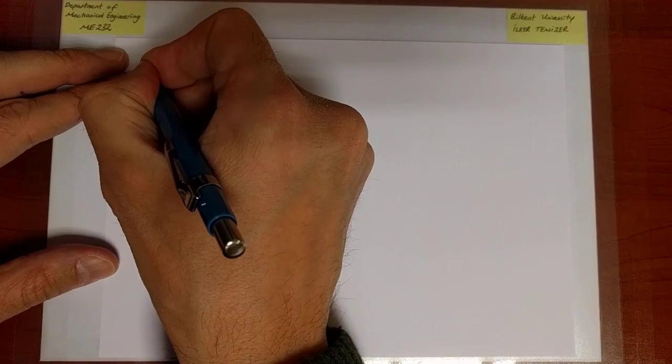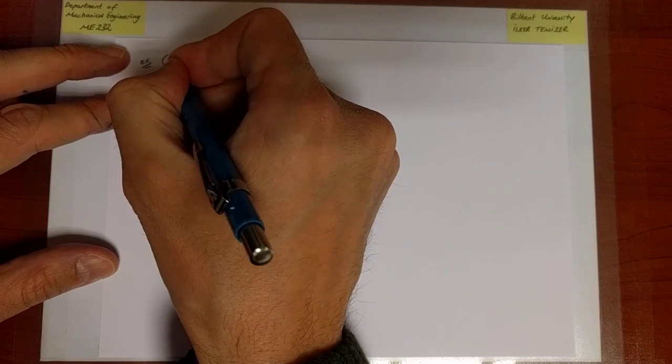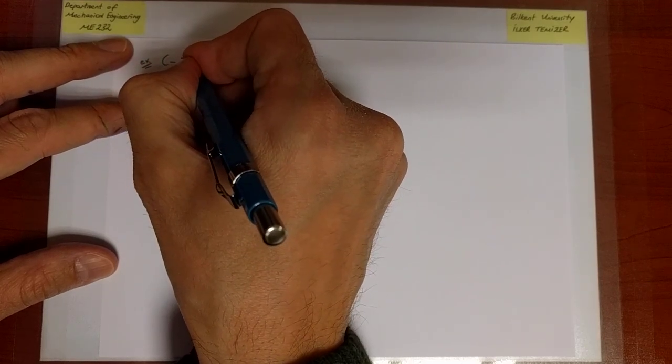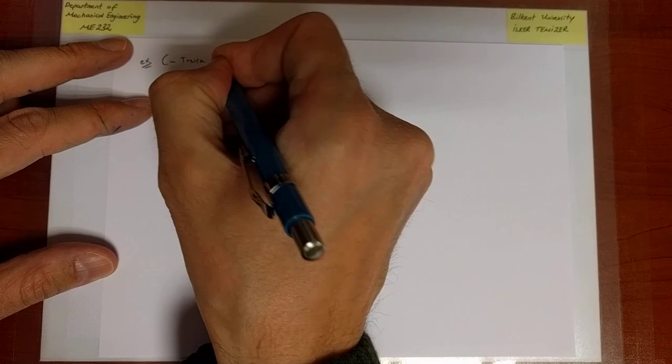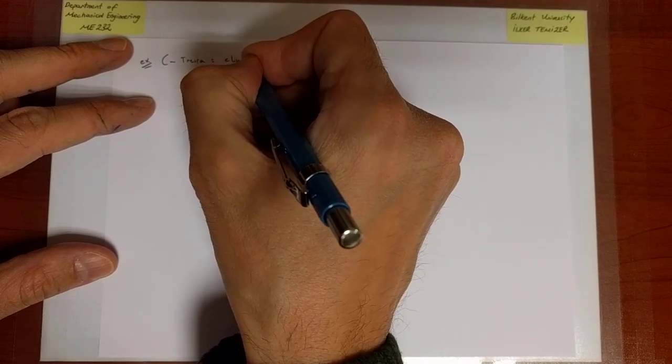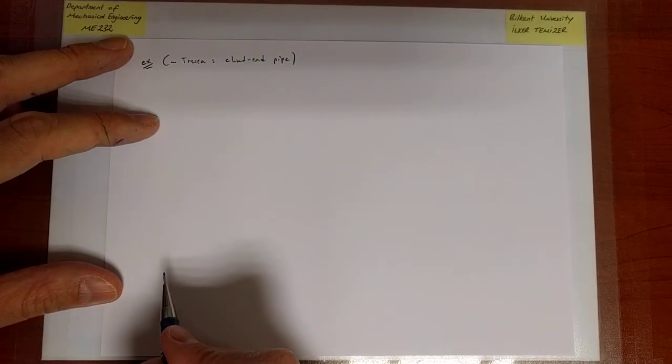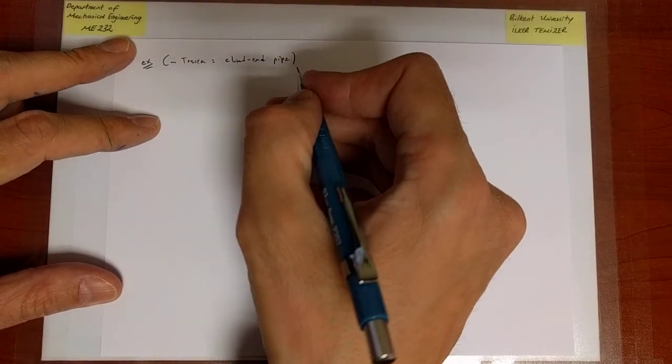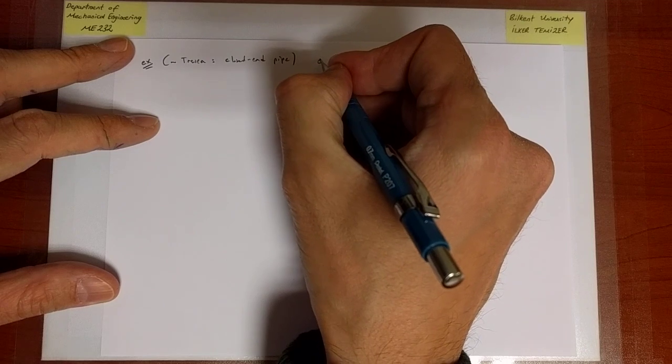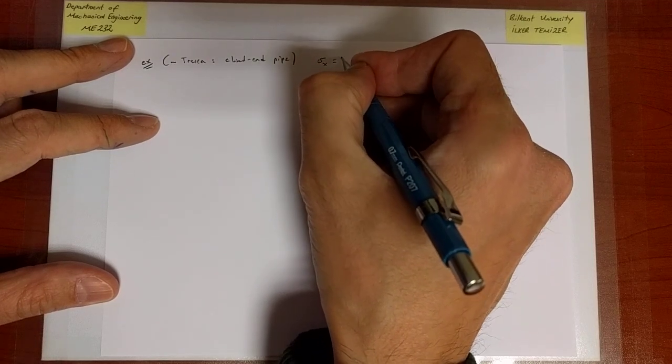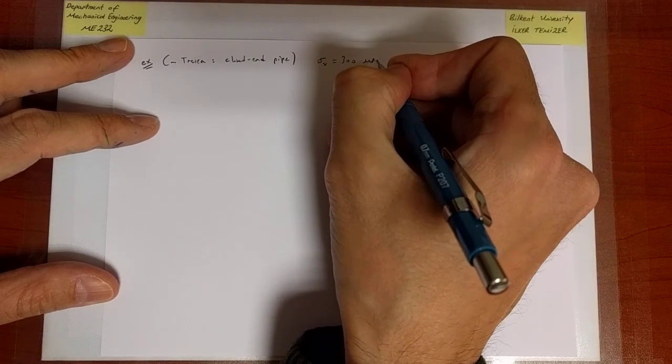Now first I'm going to address the first example that we solved in the context of the Tresca criterion. It was the closed pipe example which was internally pressurized and torqued, and remember that we found the axial stress to be 300 MPa.